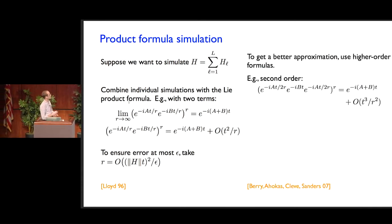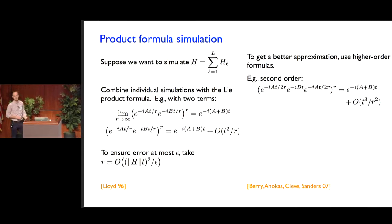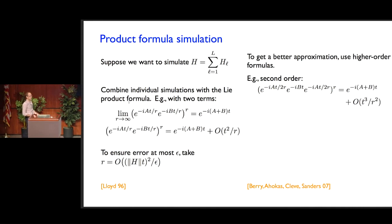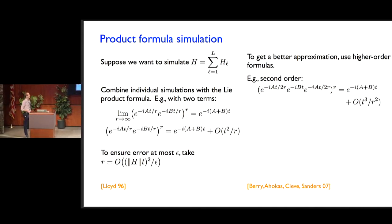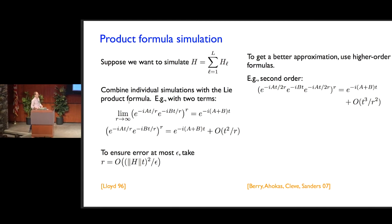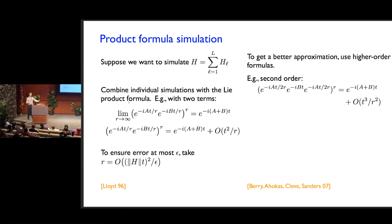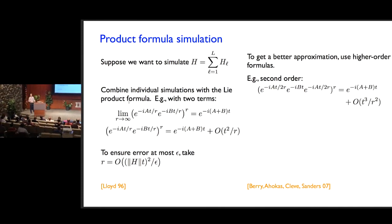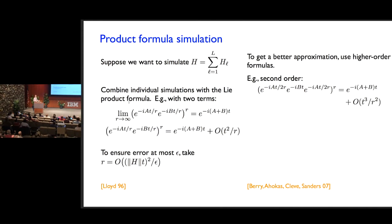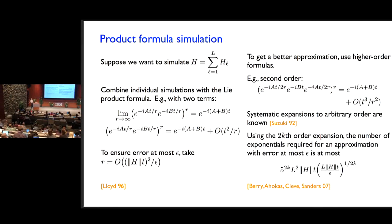There are higher-order product formulas that we can consider. The lowest-order product formulas are the simplest, but Suzuki in the 90s systematically constructed higher-order product formulas that you can use to get better and better approximations. Correspondingly, at least asymptotically, you need fewer and fewer elementary gates to approximate the evolution up to some desired error. The complexity of these approaches has been worked out asymptotically.